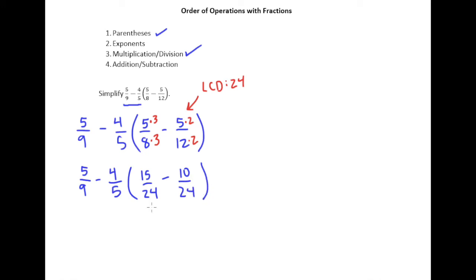Okay, and now of course we can subtract. So we have 5/9 minus 4/5 times 5/12. And so now that we've taken care of the parentheses, we know multiplication comes next.